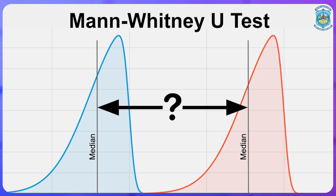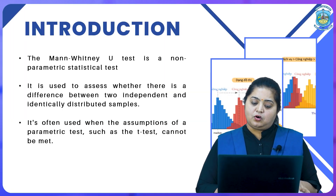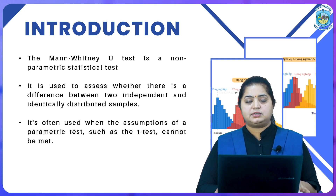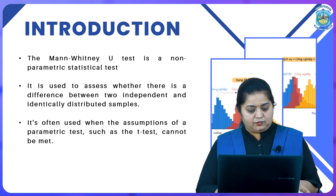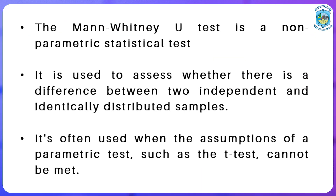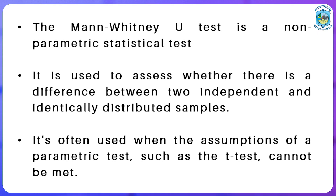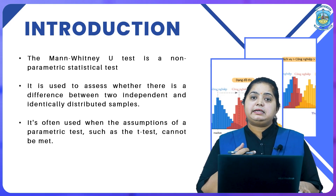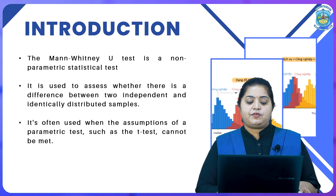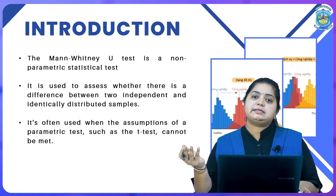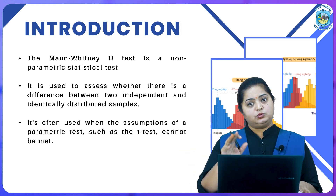The purpose and application of the U-test is that it is employed when dealing with ordinal or non-normally distributed data. Unlike parametric tests, this test does not rely on assumptions related to the distribution of data and may not meet normality requirements. It is applicable when comparing two independent groups to determine if the distribution of values in these groups are different. The test works by ranking all the data points from both groups combined, then computing the U-statistic.